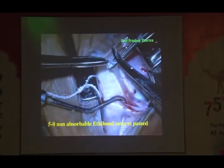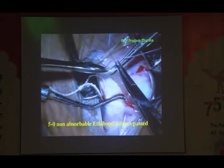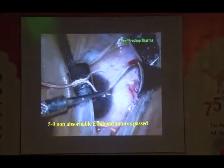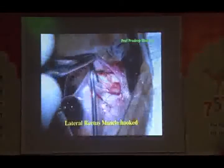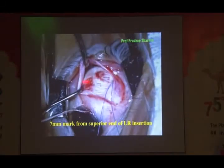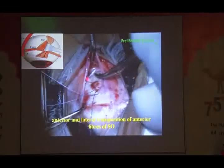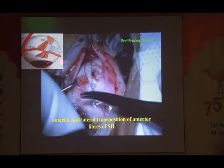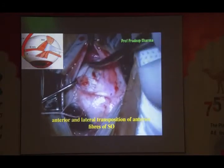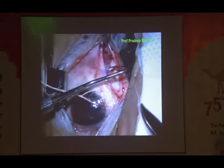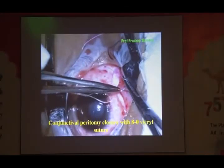We usually pass double-arm 5-0 Ethibond sutures or vicryl. Full-thickness interlocking double-arm bites are taken with 6-0 vicryl or 5-0 Ethibond. In the Fels modification we disinsert, whereas in the classical Harada-Ito procedure we do not disinsert. With the same incision we then hook the lateral rectus. The superior border of the lateral rectus is exposed and an 8 mm mark is taken from the superior insertion. Then we fix the anterior part at that 8 mm and it is transposed. The advantage of disinserting is that an adjustable procedure can be done with the modified Harada-Ito. The classical Harada-Ito advantage is that it's a reversible procedure. We close with 8-0 vicryl suture.